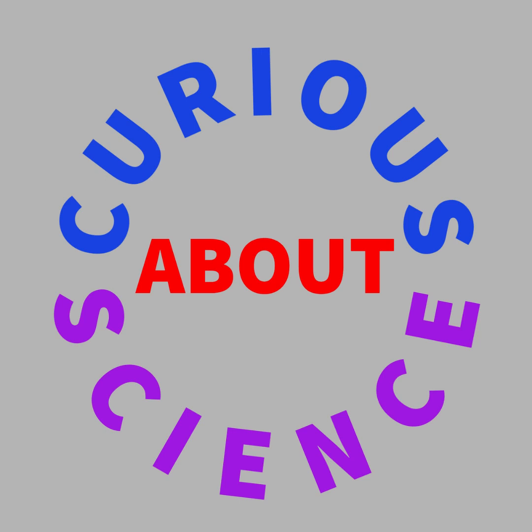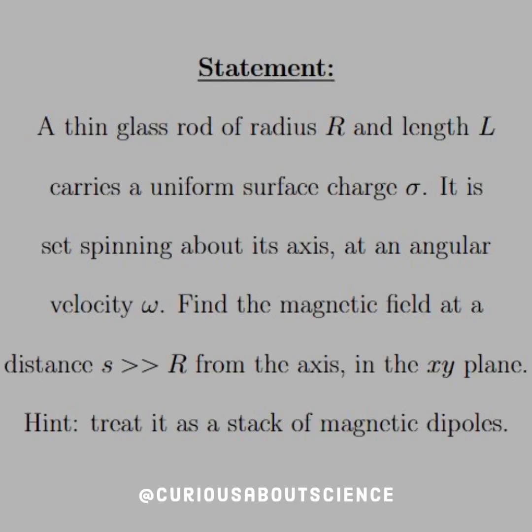Okay, so admittedly when I first saw this question I was like how and why, and then it all came together quite nice. I think you'll see the same thing for yourself. A thin glass rod of radius R and length L carries a uniform surface charge sigma. It is set spinning about its axis at an angular velocity omega. Find the magnetic field at a distance s much greater than R from the axis in the xy plane.